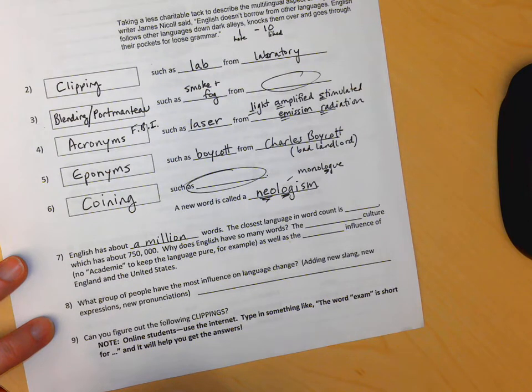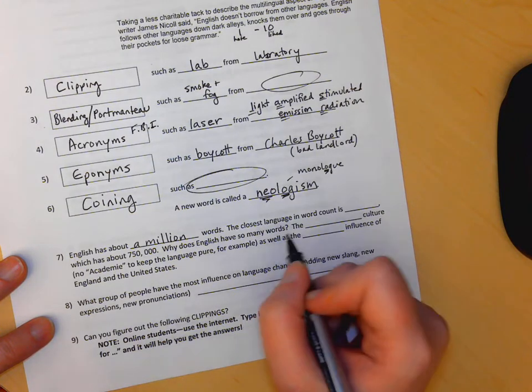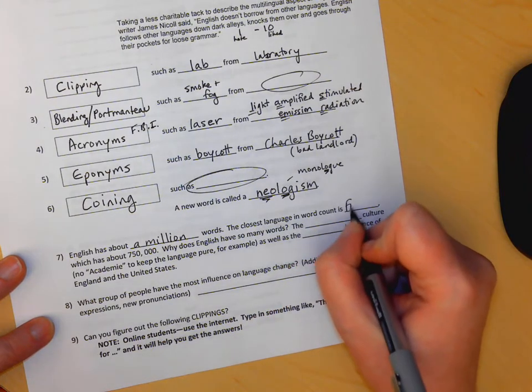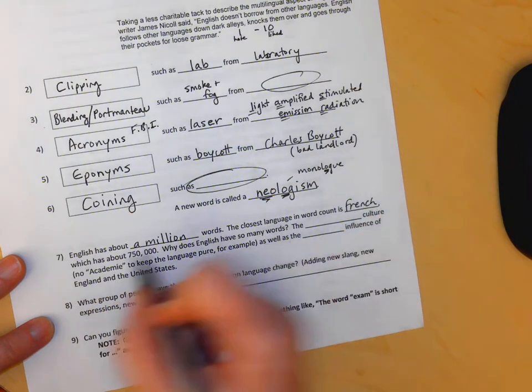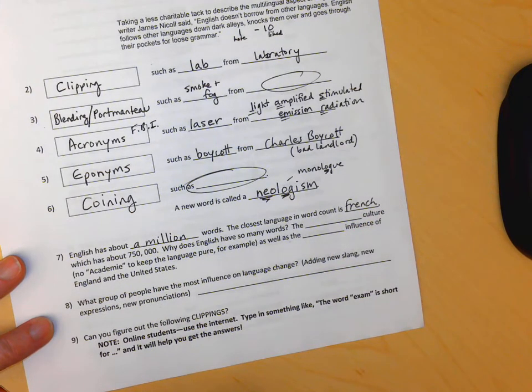Again, because English is quite accepting and because it's so widespread and influenced nowadays, we just pick up words. The closest language in word count is French, but it only has 750,000. So yeah, we got more.